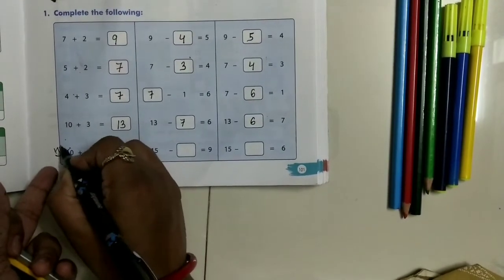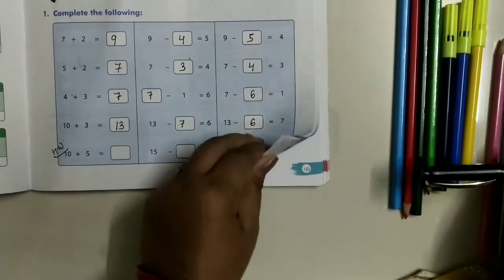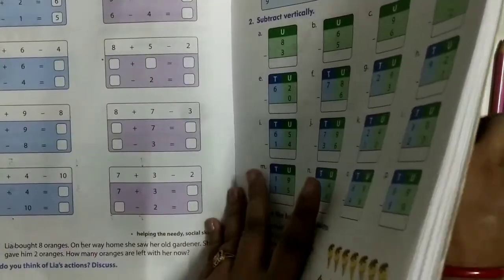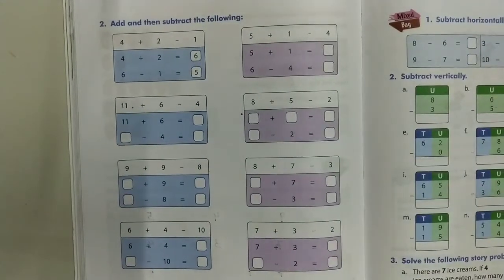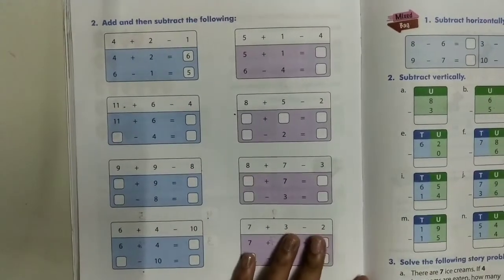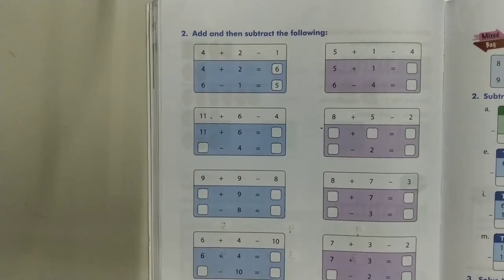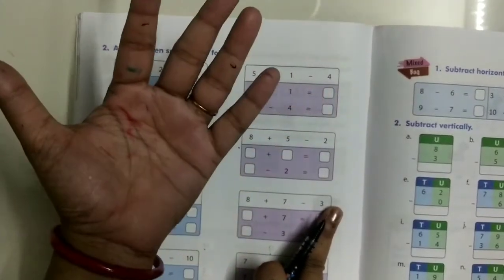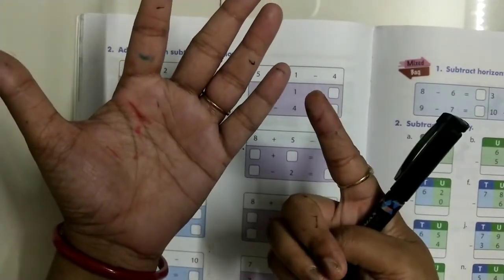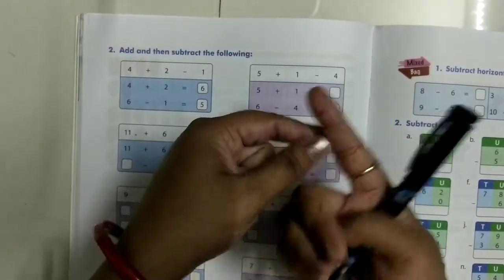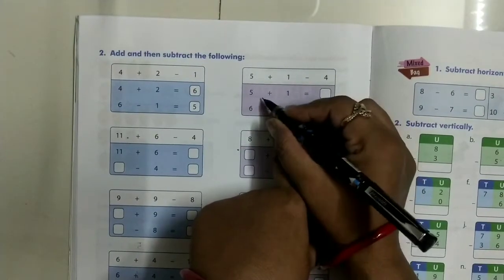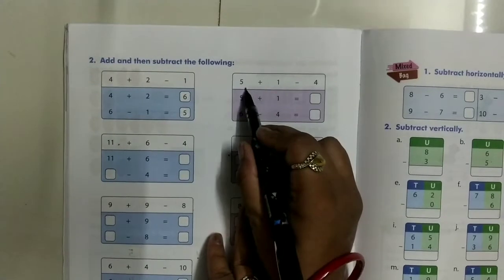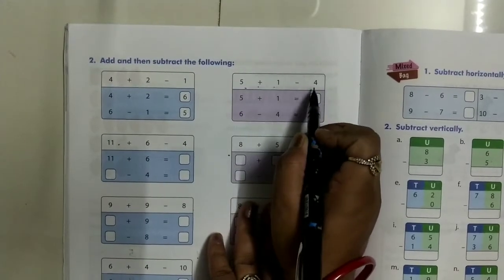Mark it as homework. Now come to the next sum — Add and then subtract the following. Come to the first one. Here we have 5 plus 1 minus 4. A puppy jumps in steps of 10. 1 step equals 10.